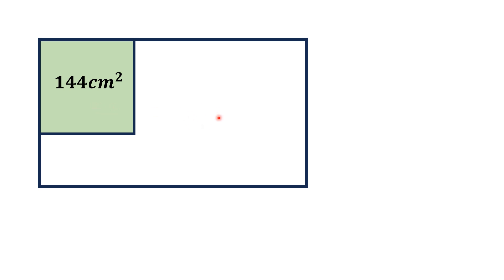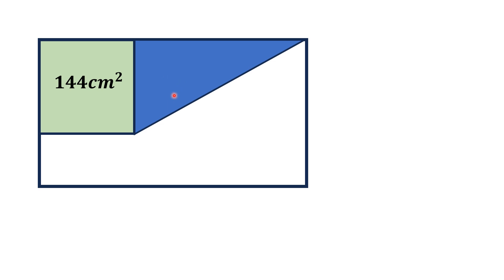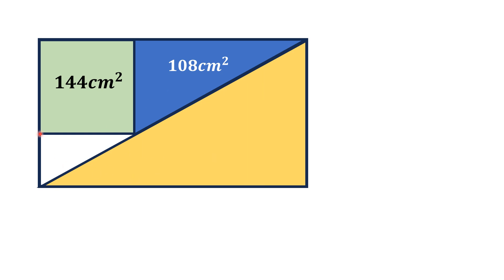Hello everyone. In this video, given is a rectangle in which a square is given with its area equal to 144 cm square. A right triangle is given which is blue shaded and its area is equal to 108 cm square. Moreover, this rectangle is divided in half with a yellow triangle, and by this limited data, we have to find the area of this yellow shaded triangle.